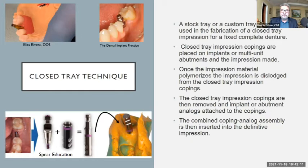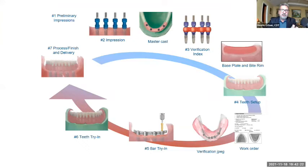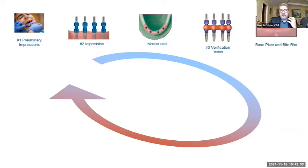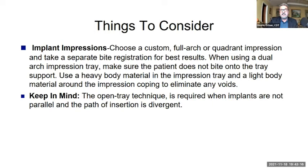Some special considerations for implant impressions: choose a custom full arch or quadrant impression tray, and take a separate bite registration for best results. When using a dual arch impression tray, make sure the patient doesn't bite onto the tray support. Use a heavy body material in the impression tray and a light body material around the impression coping to eliminate any voids. Keep in mind the open tray technique is required when implants are not parallel — I like to drill that in because we still see closed tray impressions used on divergent implants. And always do a verification index — especially with hybrid bar cases or full arch restorations. Even with a large bridge, I'd like to do a verification index.